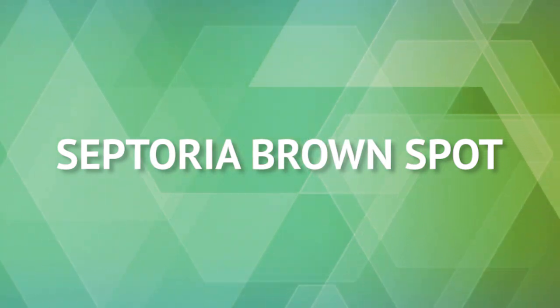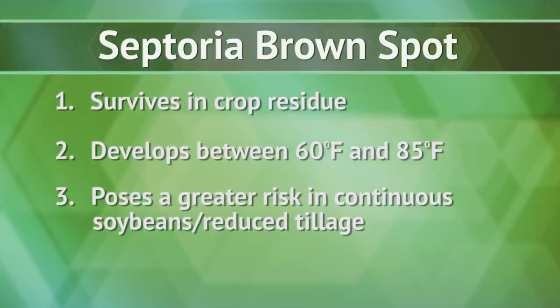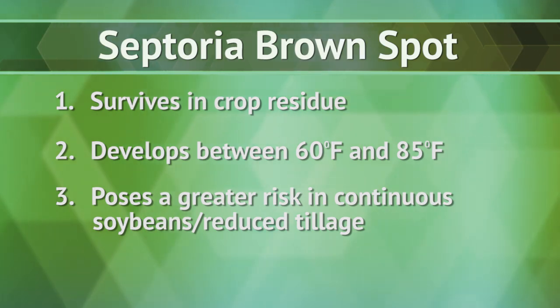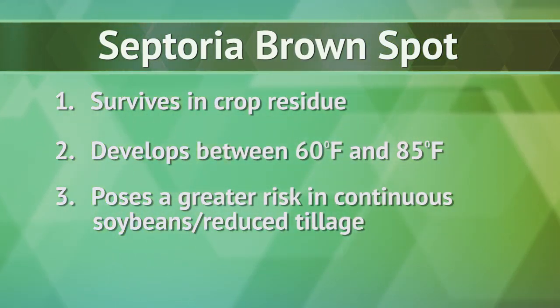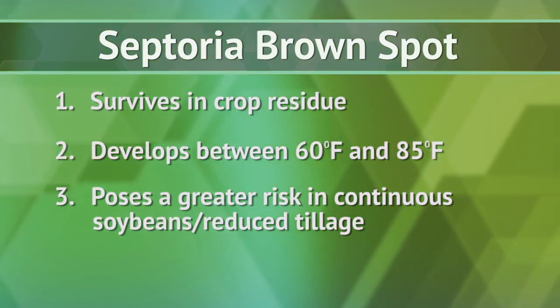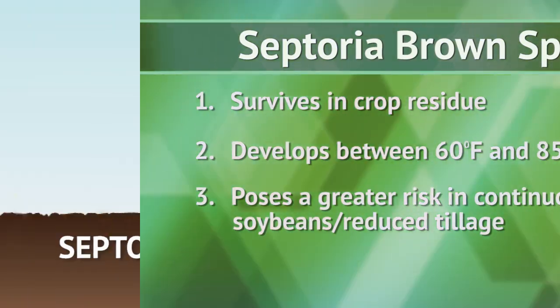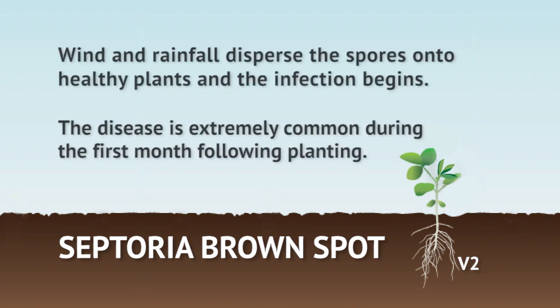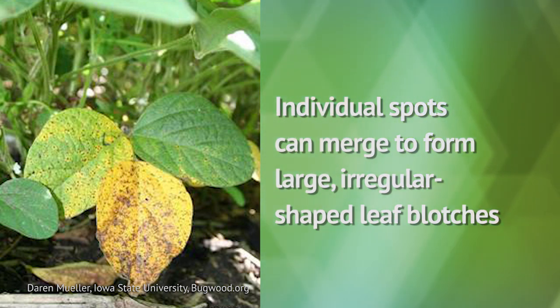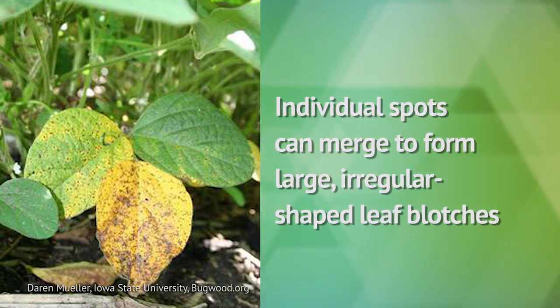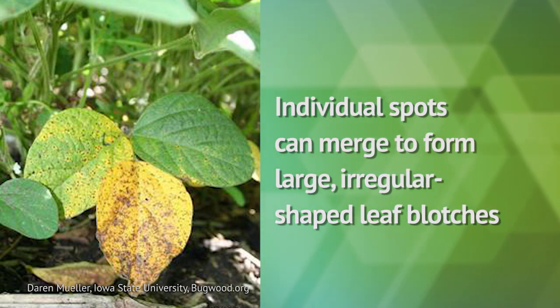Septoria leaf spot, often called brown spot, is a common disease in soybeans that growers across all regions should protect against. Microscopic spores of brown spot are produced on living tissues or dead plants and are released during warm, wet weather. The primary effect of brown spot is premature defoliation of the lower soybean leaves, as early as V2 growth stage. Signs of brown spot are small angular to circular, red to brown colored lesions ranging from minute specks to quarter-inch diameter spots.